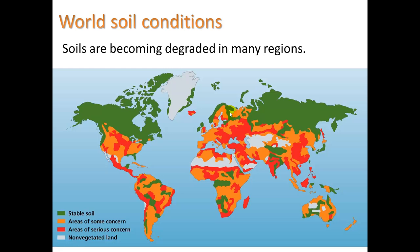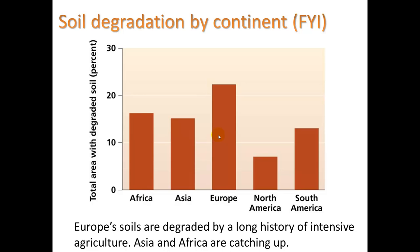Soils are becoming degraded in many regions, and we're seeing lots of examples of soil erosion and something called desertification, where the soil really is not very fertile anymore — not very good for growing new crops. We see this happening in our country, in areas of serious concern, the area we call the breadbasket of the U.S. Europe seems to have the highest total area with degraded soil, partly because of its long history of intensive agriculture, but Asia and Africa are catching up.